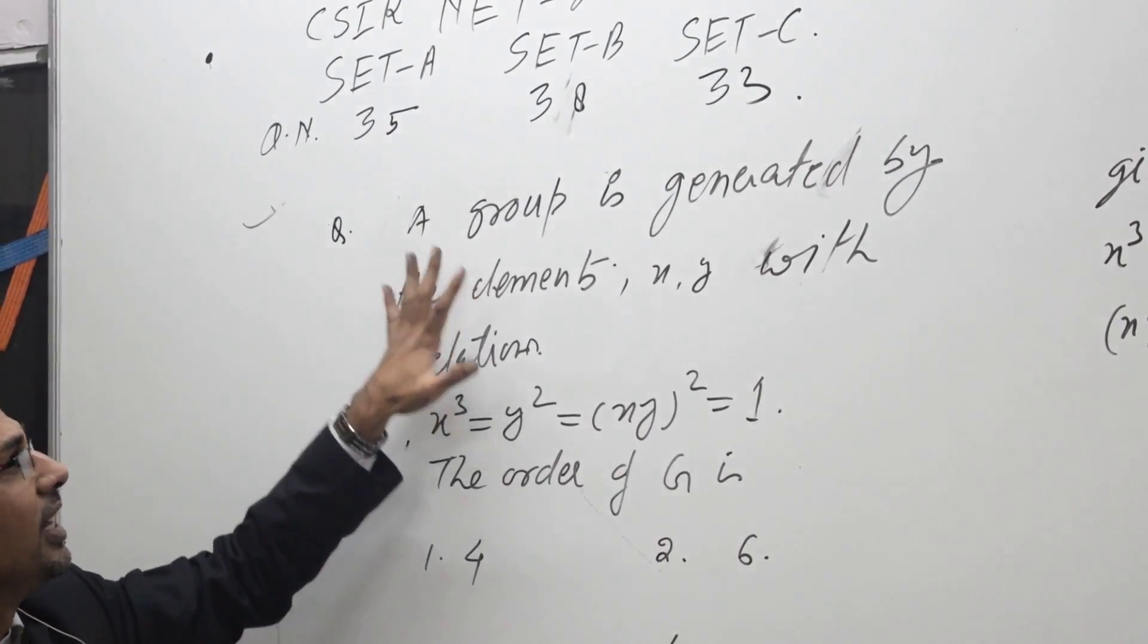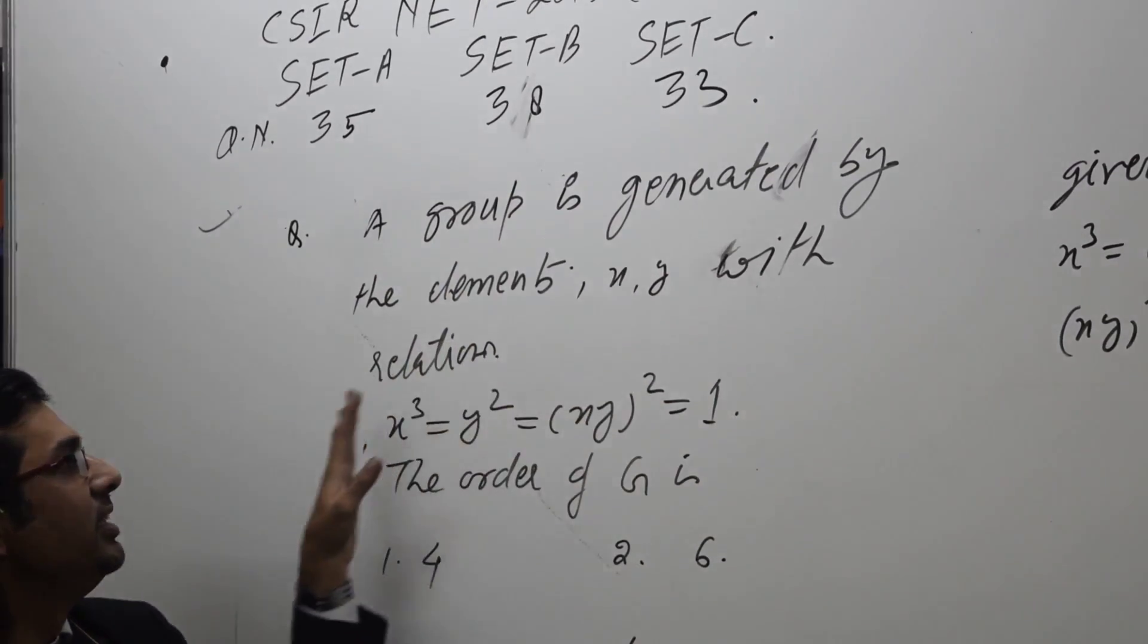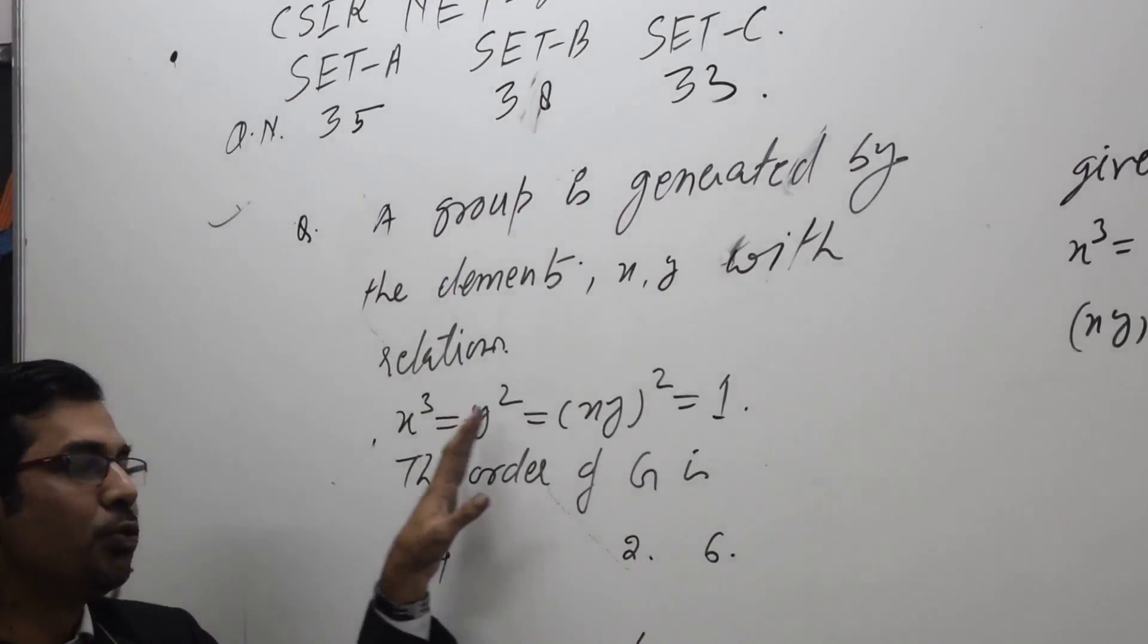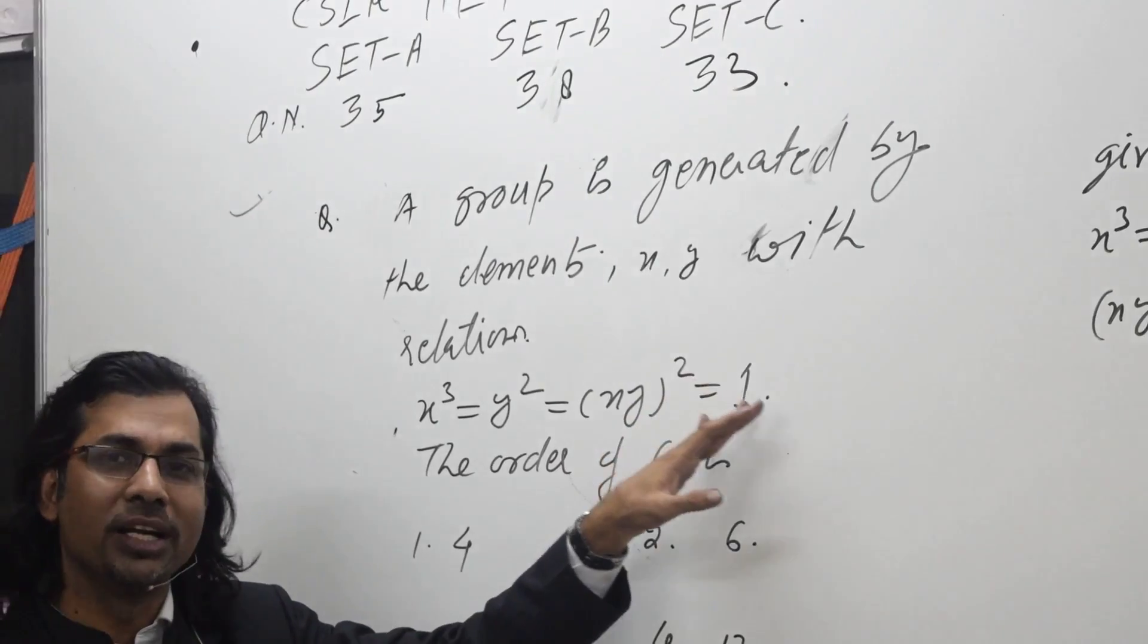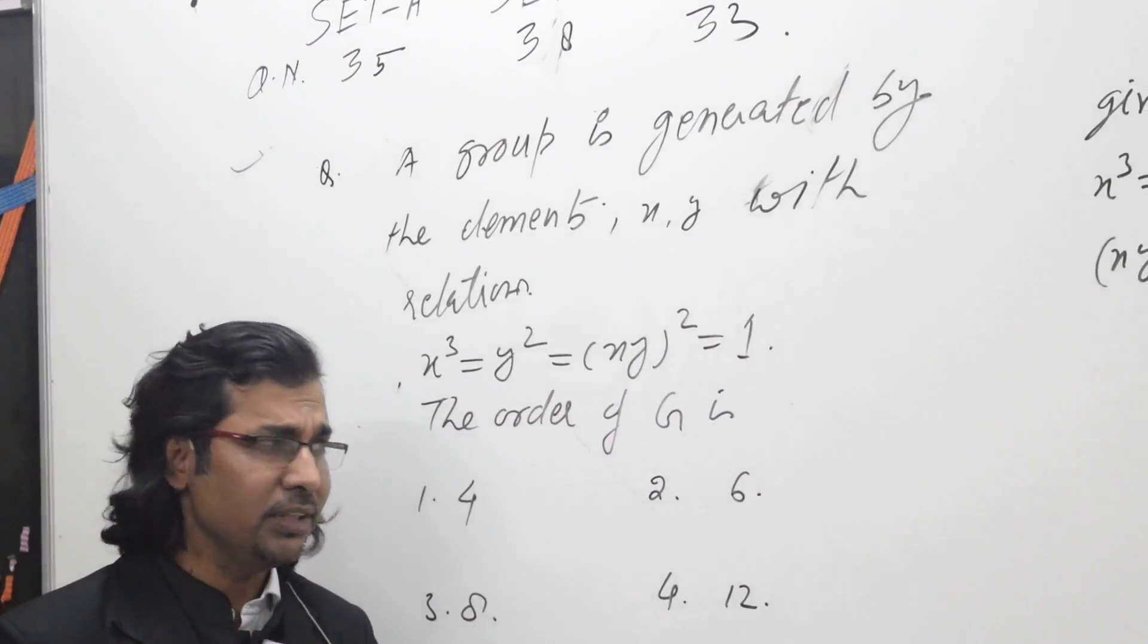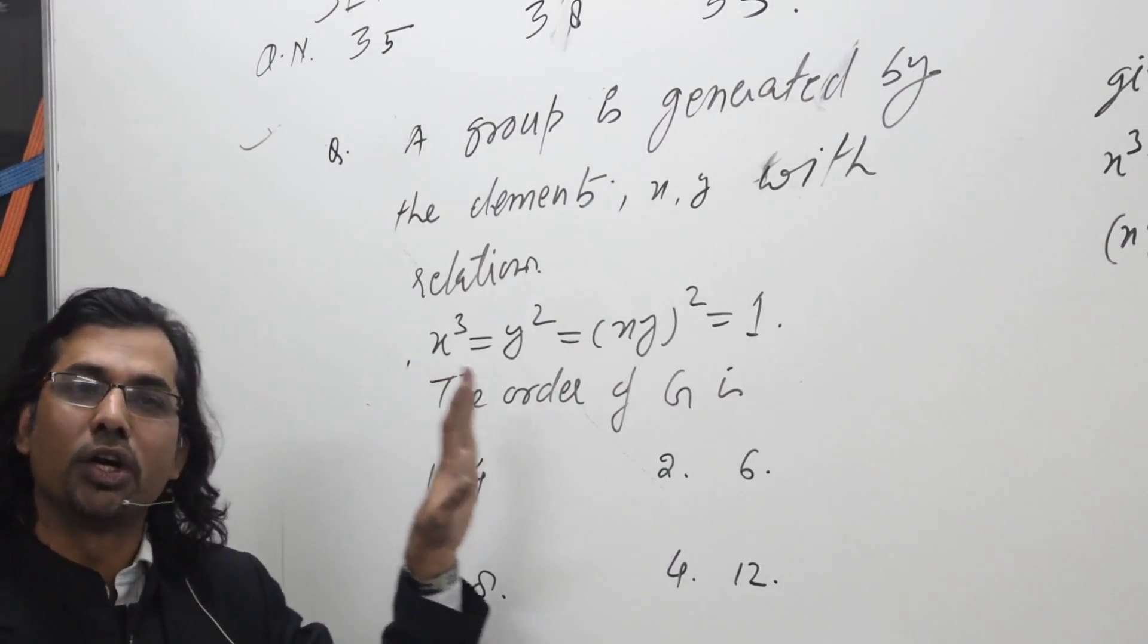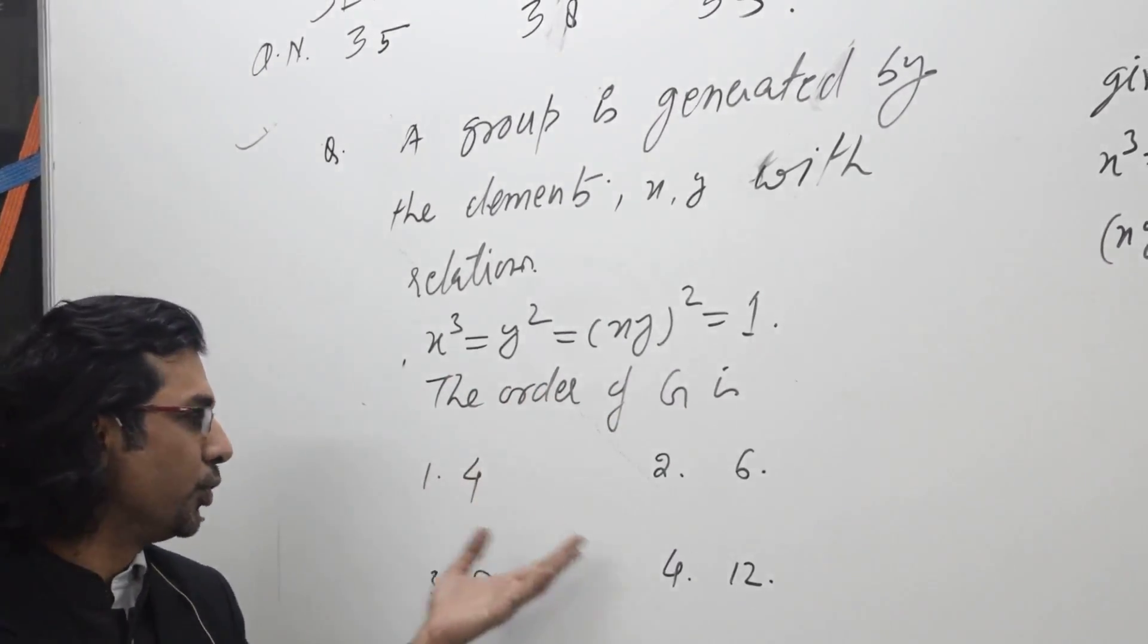The question reads out like this: A group is generated by the elements x and y with the relation x cubed equal to y squared equal to xy squared equal to 1. This is the identity element. The notation is taken here as 1, which needs to be clarified but it is given here as 1. Now we are asked to find the order of group G with the options 4, 6, 8, and 12.